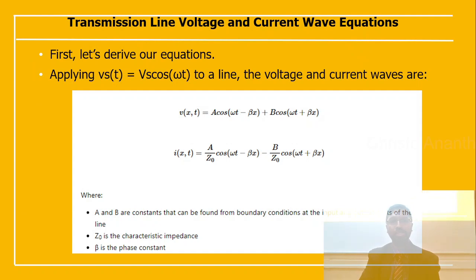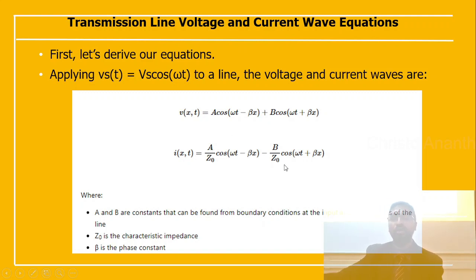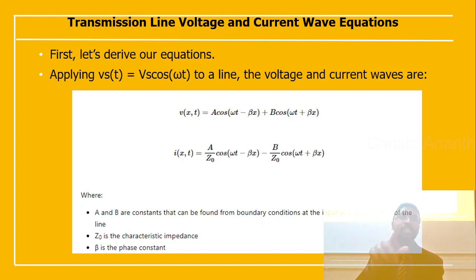The best way to visualize how waves propagate and reflect off a discontinuity is to plot the wave equations. Applying source signal Vs(t) = Vs·cos(ωt) to the line, the voltage wave is V(x,t) = A·cos(ωt − βx) + B·cos(ωt + βx), and the current wave is I(x,t) = (A/Z₀)·cos(ωt − βx) − (B/Z₀)·cos(ωt + βx), where A and B are constants found from the boundary conditions at the input and output ports. Z₀ is the characteristic impedance and β is the phase constant.